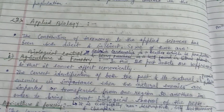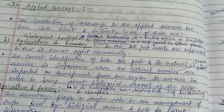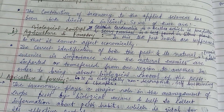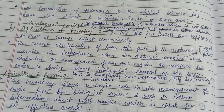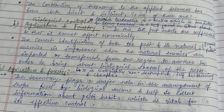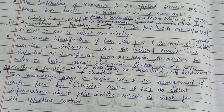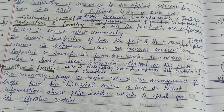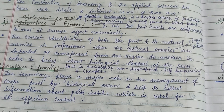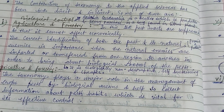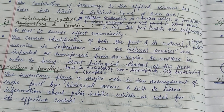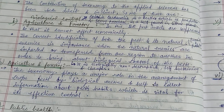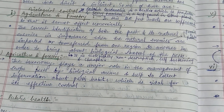Applied biology describes the contribution of taxonomy to applied science, which has been both direct and indirect. One example is biological control: Rodolia cardinalis is a beetle which is a predator, and Icerya purchasi is a bug found in the citrus plant. These insects are suppressed so that they cannot cause economic damage.